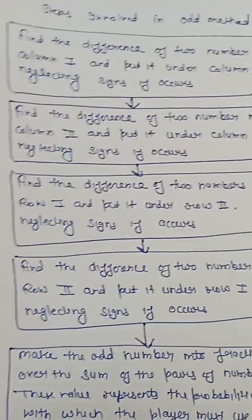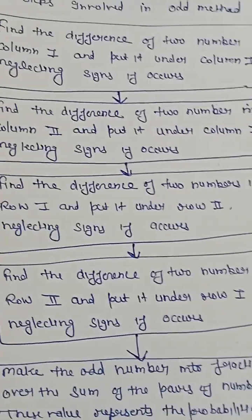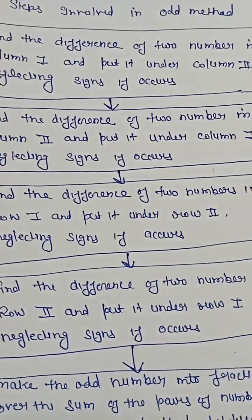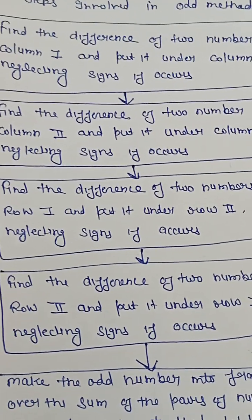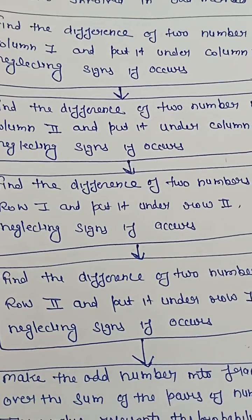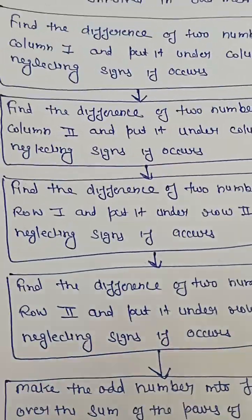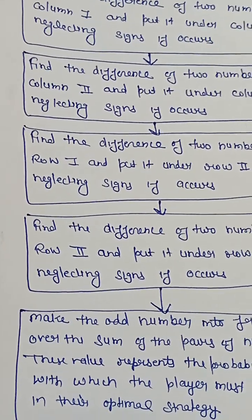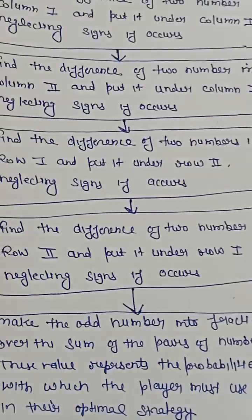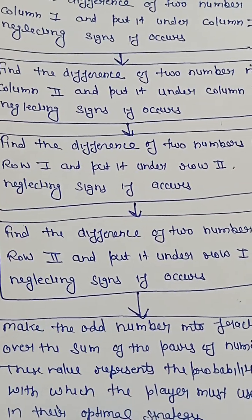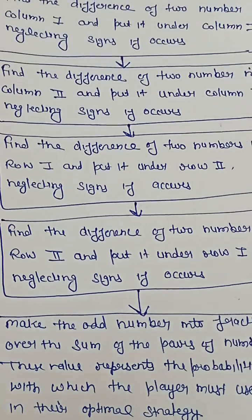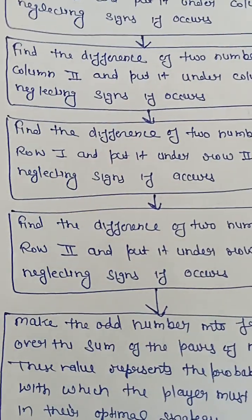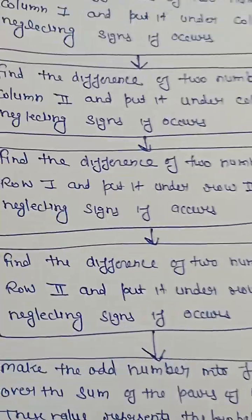Third step: find the difference of two numbers in row first and put it under row second, neglecting sign if occurs. We will take the difference row-wise. The first row will have two values, we will take the difference and put it under row first, ignoring the sign.